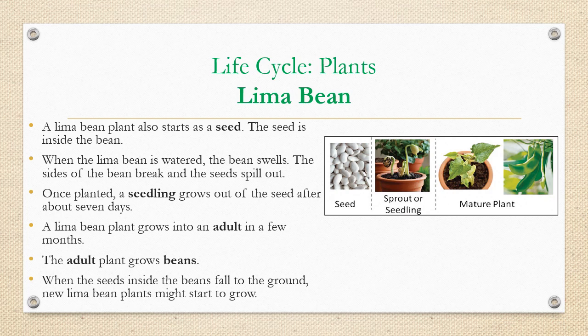Another plant life cycle that's similar would be the lima bean. It also starts as a seed, but what's different is that the lima bean plant has a bean around the seed — the bean keeps the seed safe. Plants actually want animals to eat their beans because that way they'll eat the seeds and spread them around, giving us more lima beans. When planted and watered, the seed sprouts into a little seedling, then gradually grows into a mature adult plant, and instead of flowers it will grow beans with seeds inside.